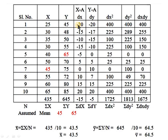Now we calculate dx by subtracting the assumed mean of 45 from each x value: 25−45=−20, 30−45=−15, 35−45=−10, 30−45=−15, 40−45=−5, 50−45=5, 45−45=0, 55−45=10, 60−45=15, 65−45=20. Adding negative values and positive values separately, Σdx equals −15.